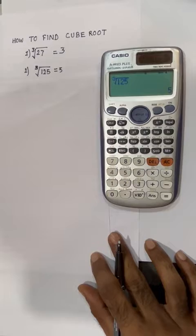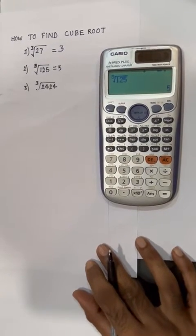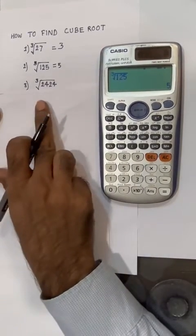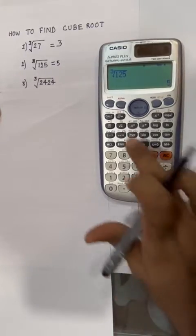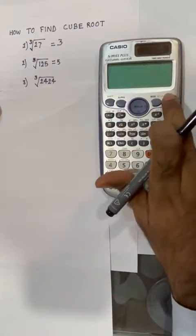Now we will take a random number and find the cube root of that number. Here we have taken 2424. Press shift and cube root.